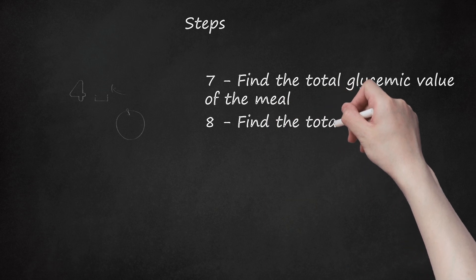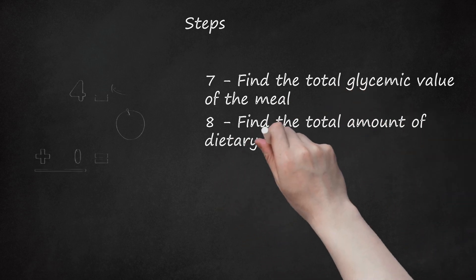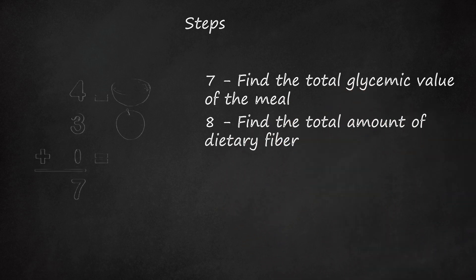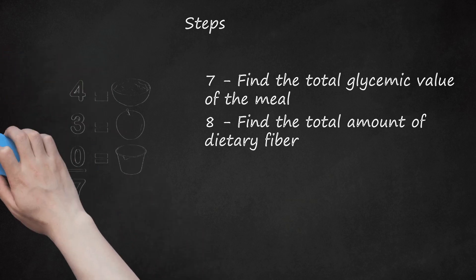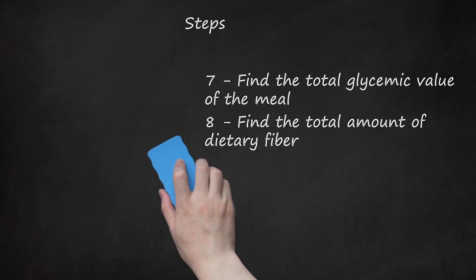Step 8: Find the total amount of dietary fiber. Add the dietary fiber of each item in the meal together. This information can be found on the nutrition label of most foods. Example: The oatmeal has 4 grams of dietary fiber, the apple has 3 grams of dietary fiber, the yogurt has 0 grams of dietary fiber. 4 plus 3 plus 0 equals 7 total amount of dietary fiber in the meal.